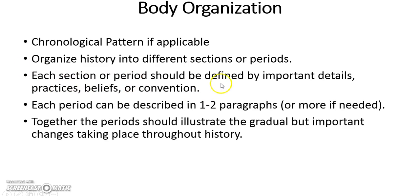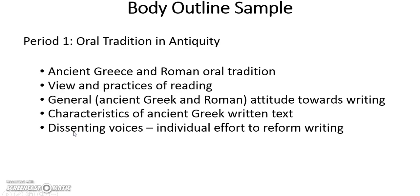Each section or period should be defined by important details, practices, beliefs, or conventions, and should show some kind of monumental or important change or development — some kind of shift away from the past. Each period can be described in one or two paragraphs, discussed in chronological order. Together, the periods should illustrate the gradual but important changes taking place throughout history. Making an outline would help you develop this historical account.